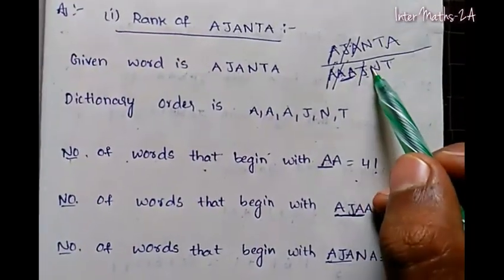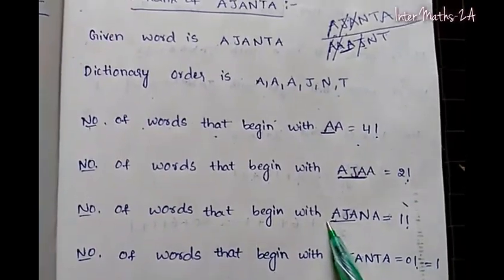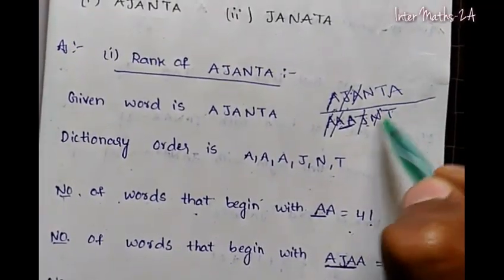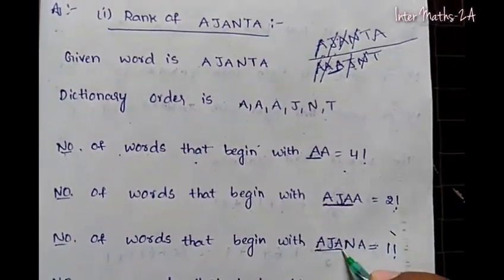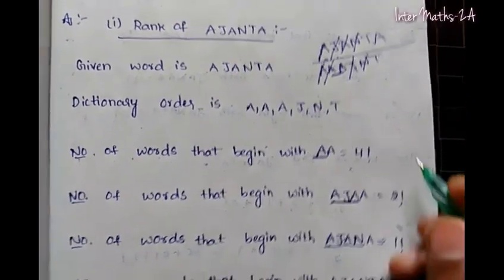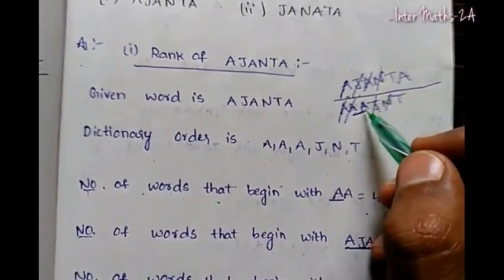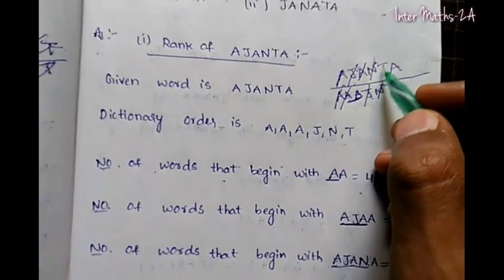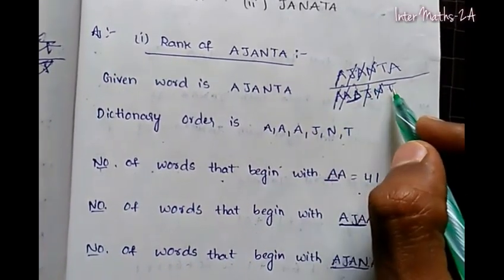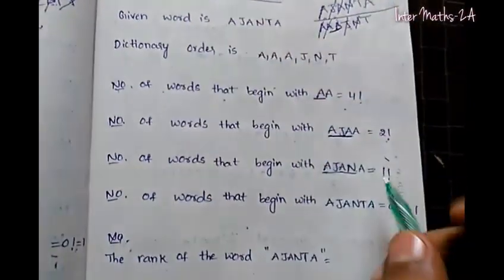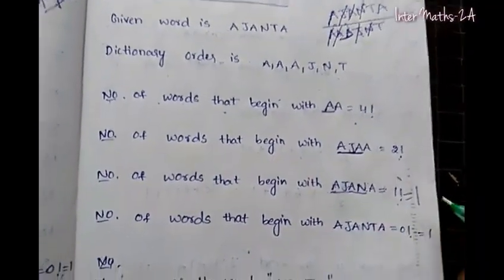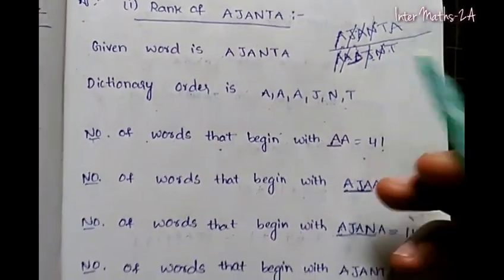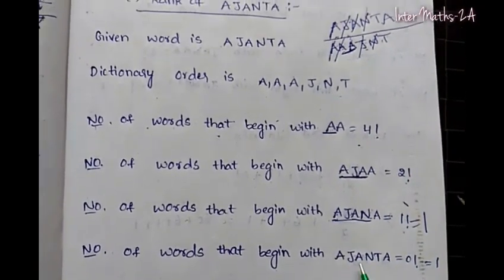The next letter is N. The number of words that begin with N: A and J are fixed, and I choose N. After fixing A, J, N, the remaining letters give some arrangements. The number of words beginning with T and N is then computed with the remaining letters.